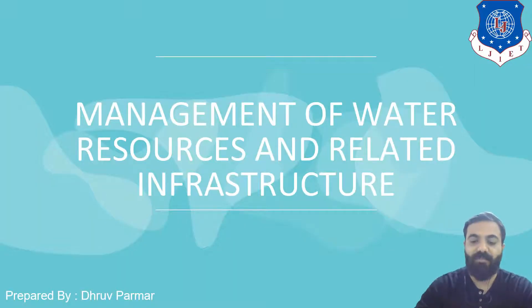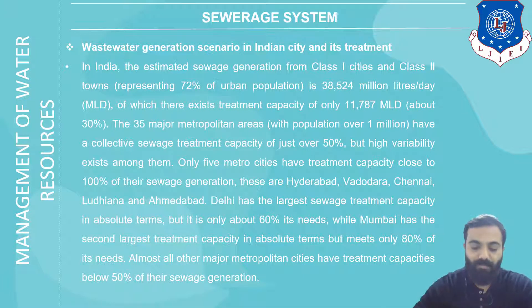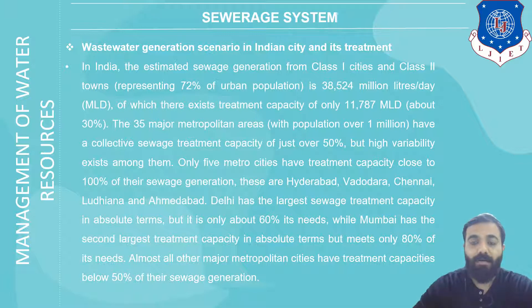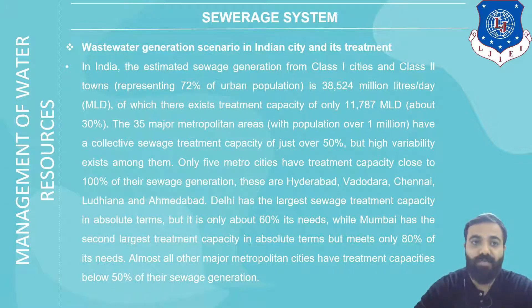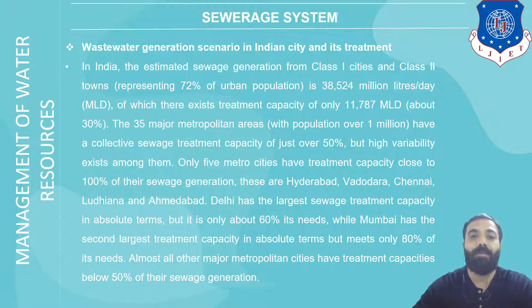Hello to all of you. In this lecture we discuss about the C-waste system, clearance of waste water generation scenario in India's cities and its treatment. In India, the estimated sewage generation from Class 1 cities and Class 2 towns, which represent 72% of the urban population, is 38,524 MLD, with existing treatment capacity of only 11,787 MLD.